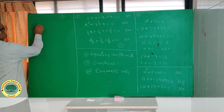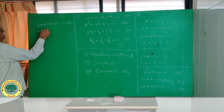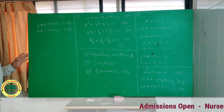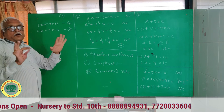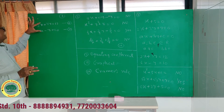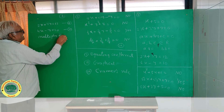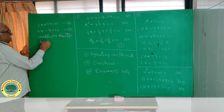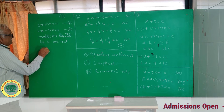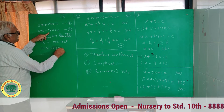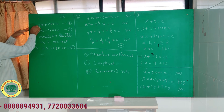Take the two equations: 2x plus 3y equal to 12 — equation 1 — and 4x minus y equal to 10 — equation 2. See the coefficients: for x, the coefficients are 2 and 4, not equal. For y, the coefficients are 3 and 1, not equal. We need to make them equal. Multiply equation 2 by 3 to get 12x minus 3y equal to 30 — equation 3.